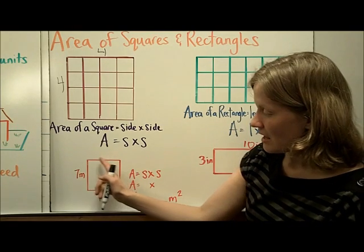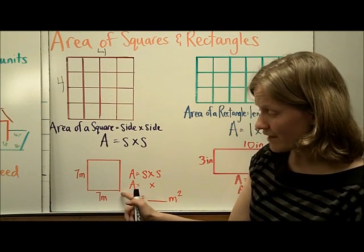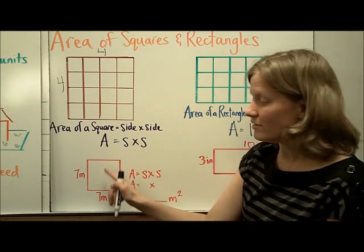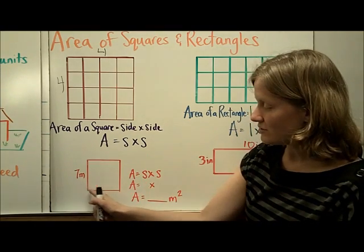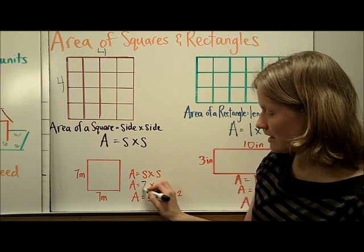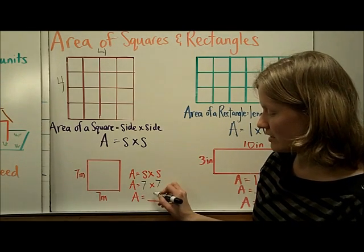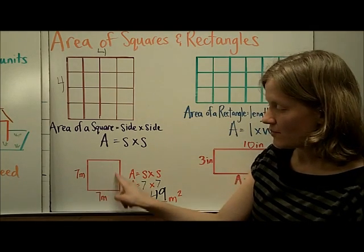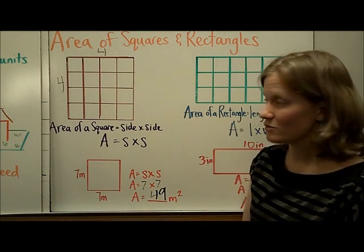So if we have a square here that we see is 7 meters on one side, and remember it's 7 meters on all of the sides, but we can multiply the two sides together, 7 times 7, and we get an area of 49 meters squared. So this square would have 49 meters squared.